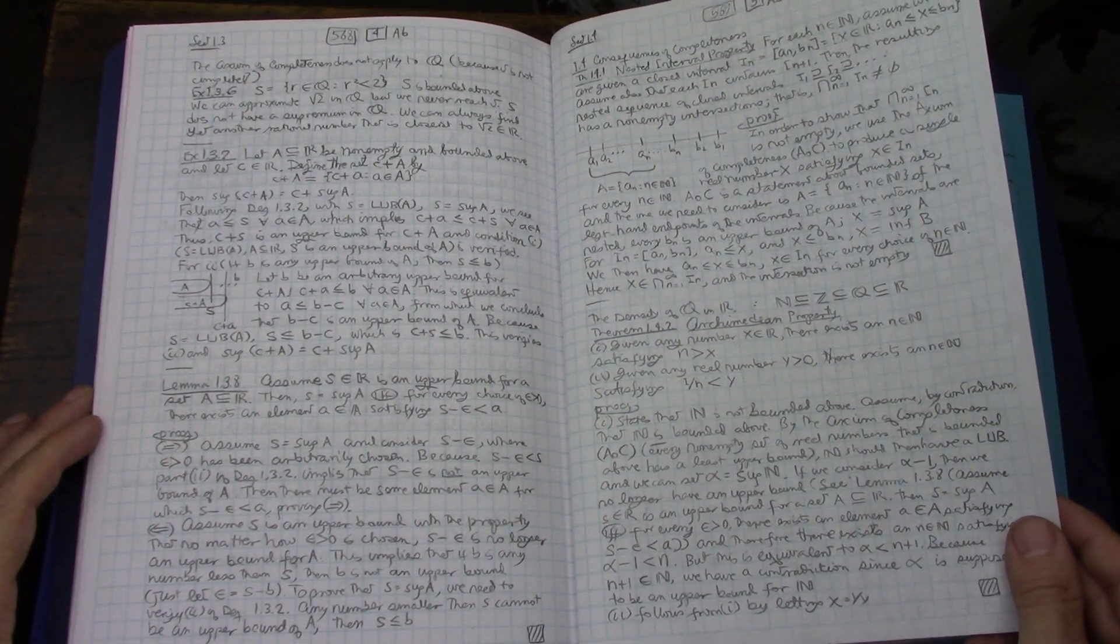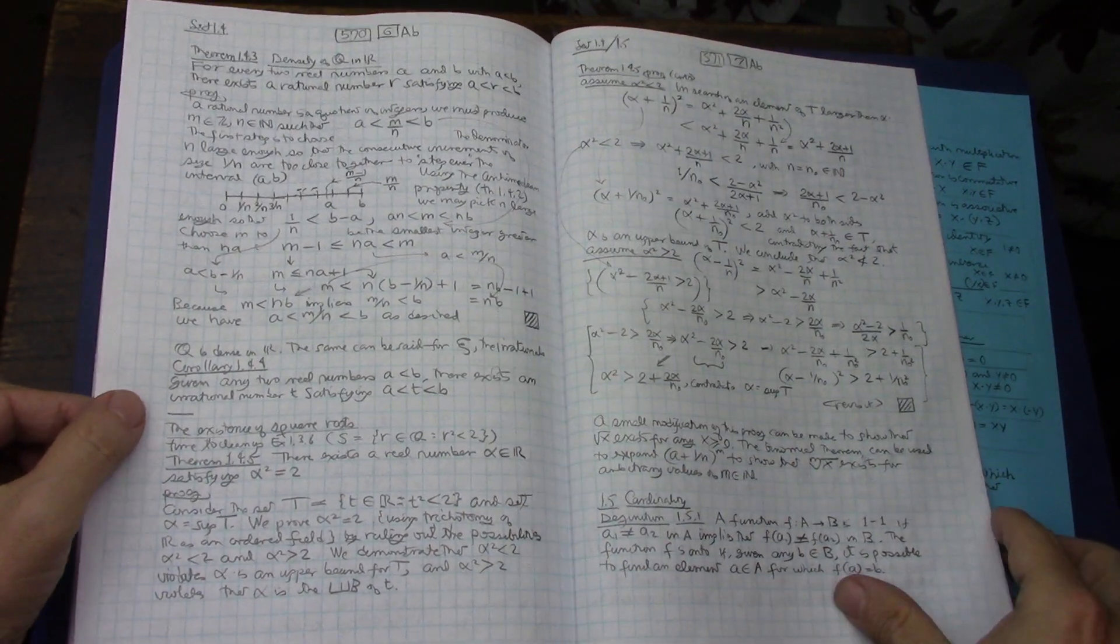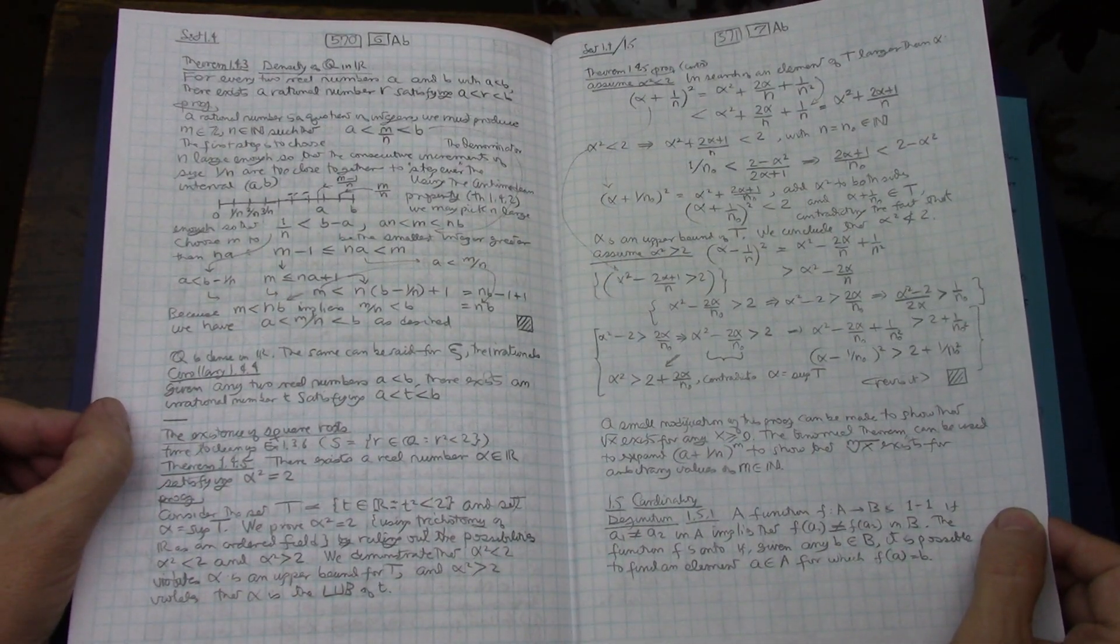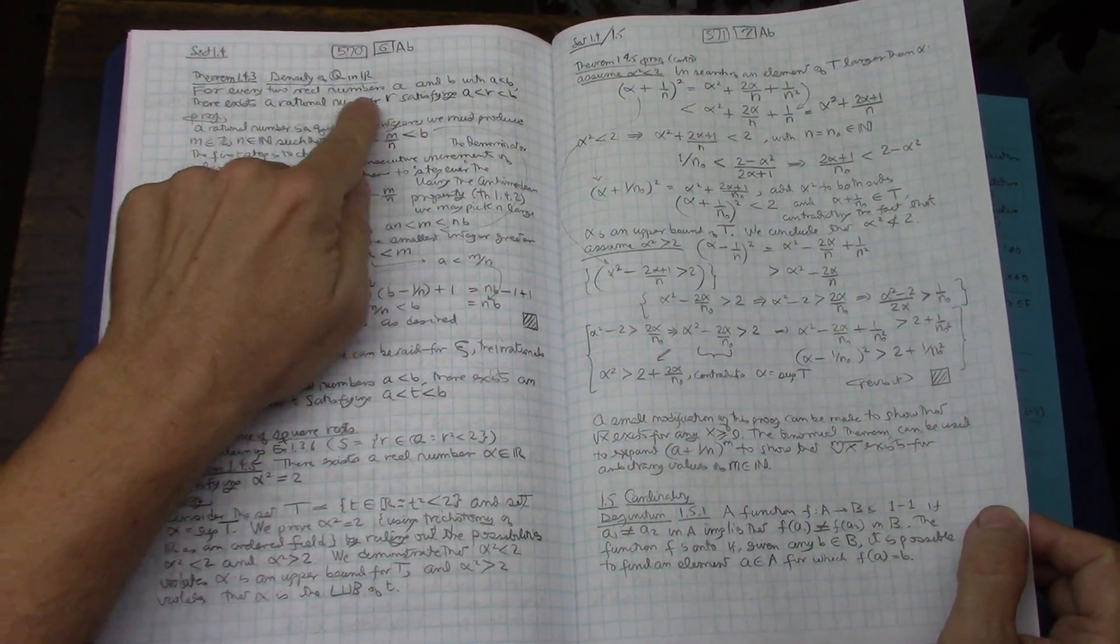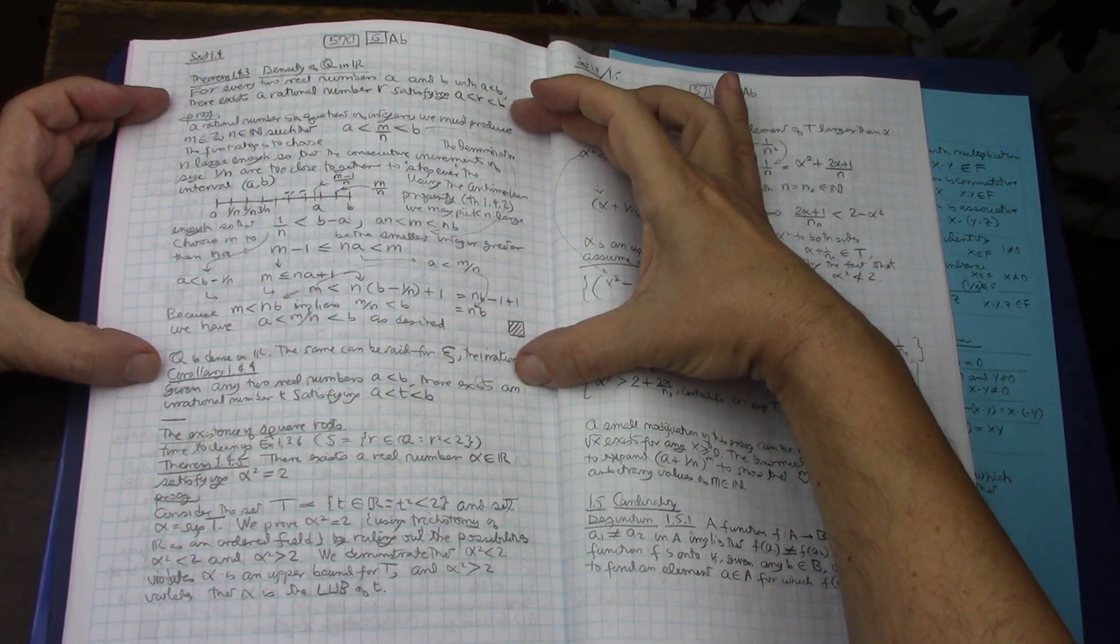I really liked a lot Abbott's definition of the proof of density of Q in R. This is really, really well explained.